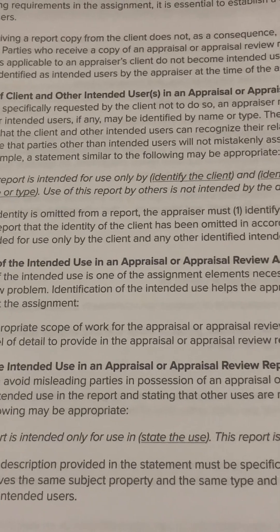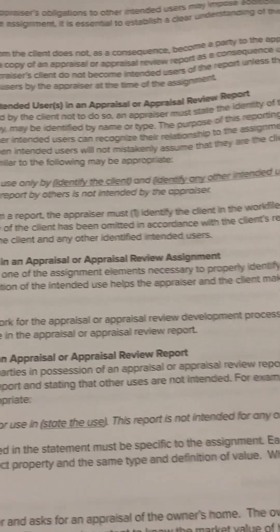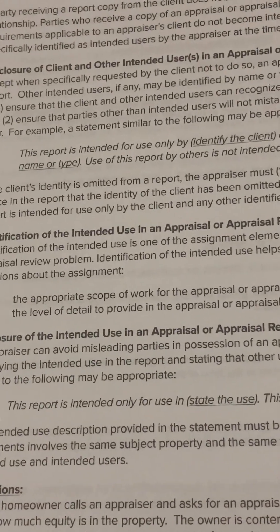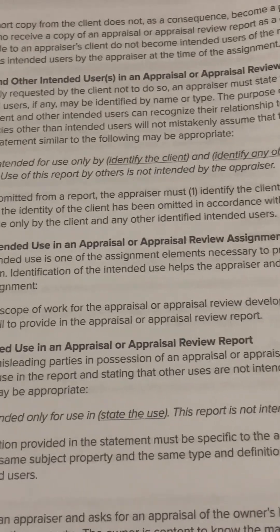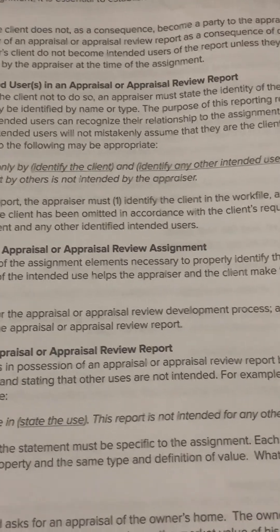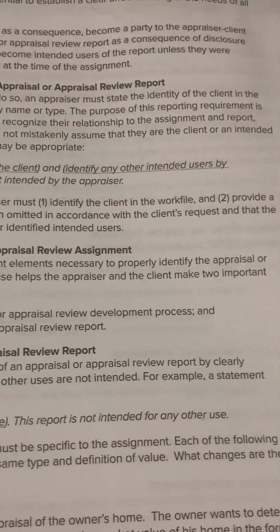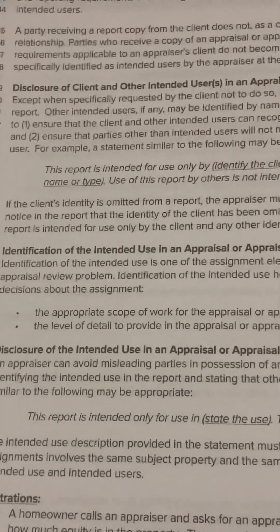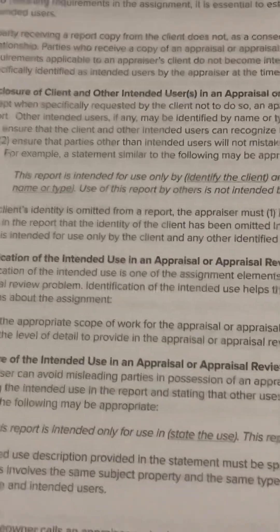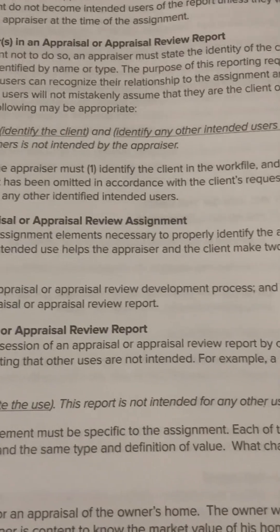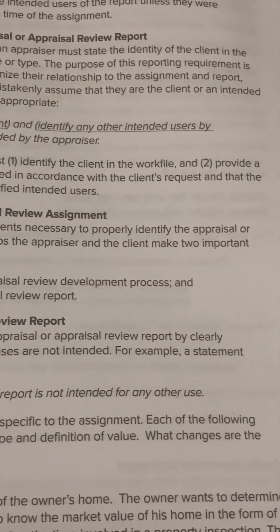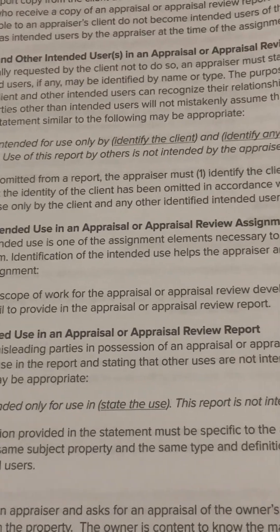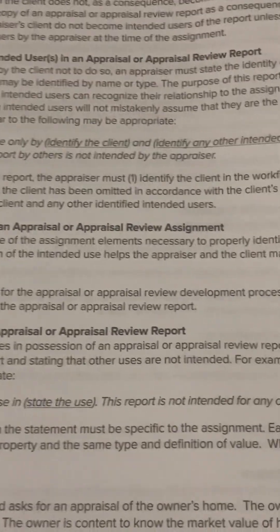and identify any other intended users by name or type. 'Use of this report by others is not intended by the appraiser.' If the client's identity is omitted from a report, the appraiser must, number one, identify the client in the work file, and, number two, provide a notice in the report that the identity of the client has been omitted in accordance with the client's request.